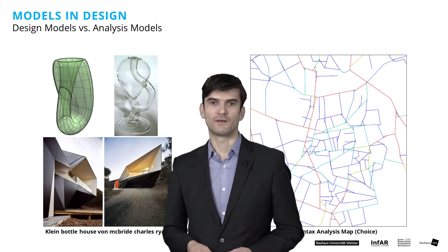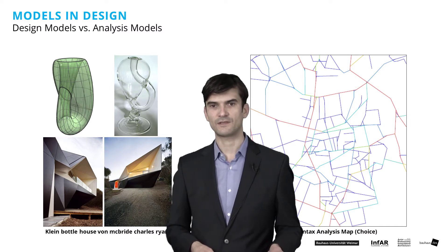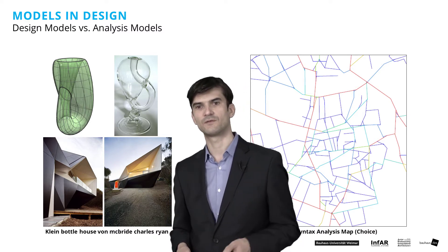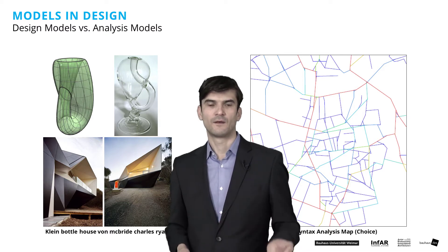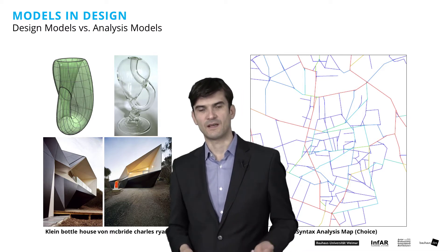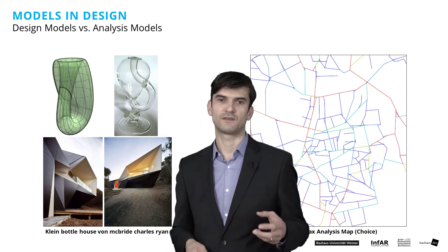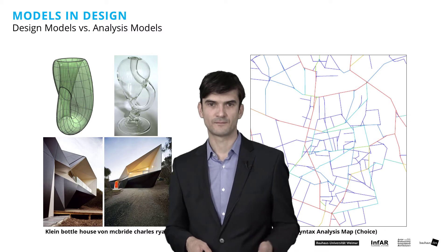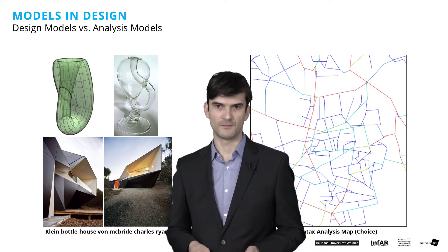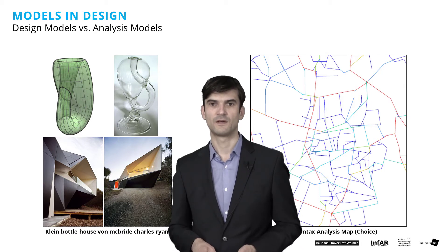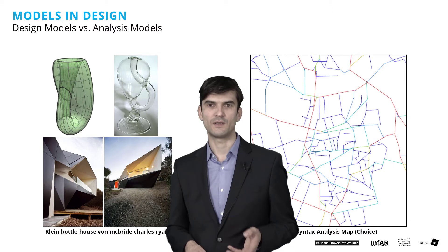Scientific models are made to analyze aspects and understand their internal mechanisms — how they work. These models deal with tame problems, in contrast to models that are used for the synthesis of something. Usually in design and planning, we want to do something new, which means we synthesize a new artifact. These models have to deal with the so-called wicked problems. Wicked problems are already difficult to formulate and they have no ideal solution.